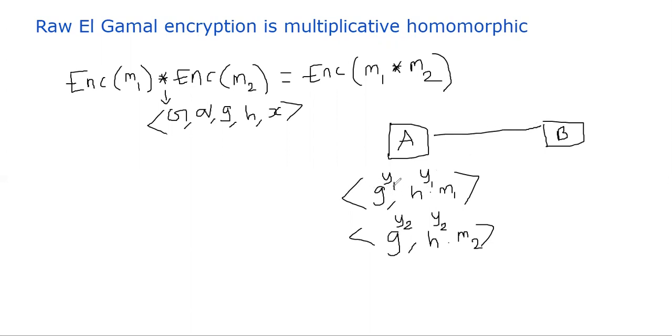What happens if these two ciphertexts are multiplied? Well, you can easily see that when you multiply these two things, you get, let's say, you multiply using the group multiplication operator, you get G power and the power can be added in the exponent.